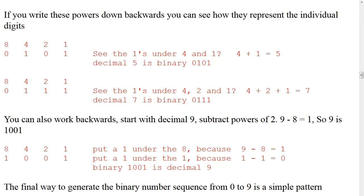Let's do it again. Write down 8, 4, 2, 1. Underneath, put 0111. The ones appear under 4, 2, and 1. Four plus 2 plus 1 equals 7, so decimal 7 is binary 0111.